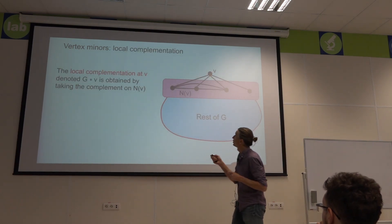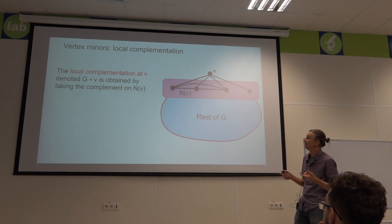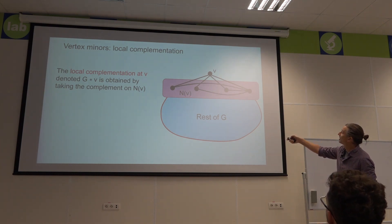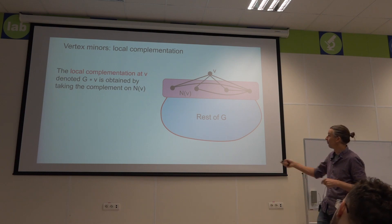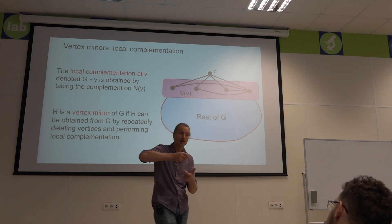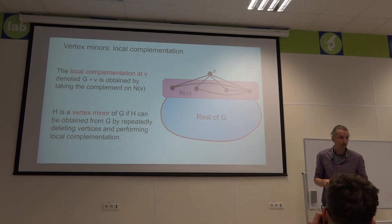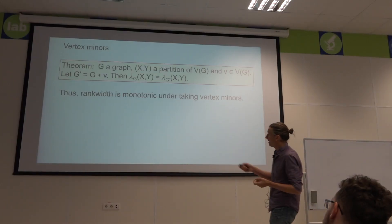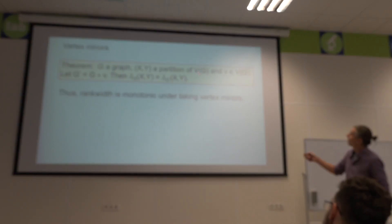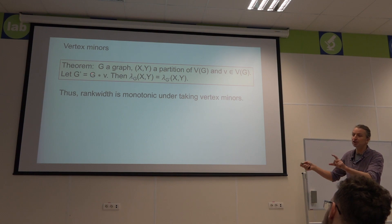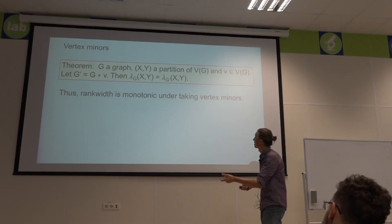There's a second operation we'll use in the definition of vertex minors: local complementation. To locally complement at a vertex V — denoted G star V — I look at the neighborhood of V and take the complement on that subgraph, swapping the adjacency relationship on the neighborhood of V while the rest of G remains unchanged. Vertex minors are the graphs I can obtain by repeatedly doing this local complementation operation and deleting vertices. It's not too hard to show that local complementation at a vertex doesn't change the rank of any cut, so rank width is monotonic under taking vertex minors.